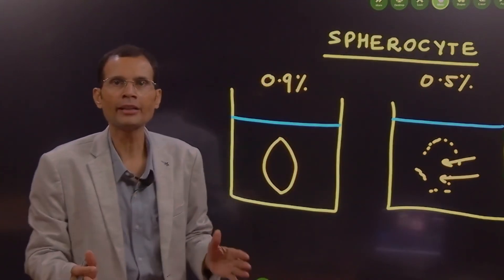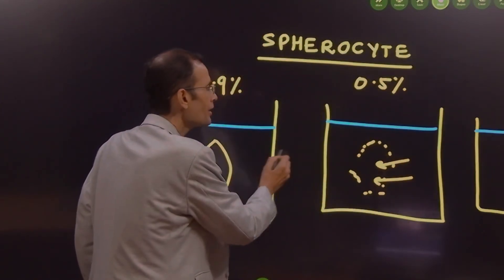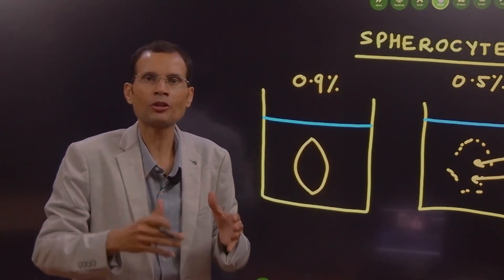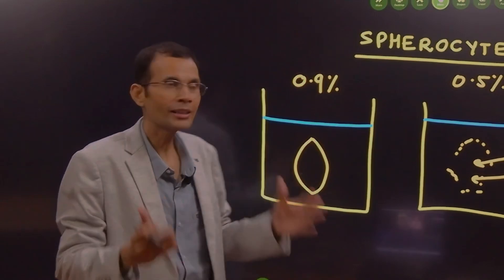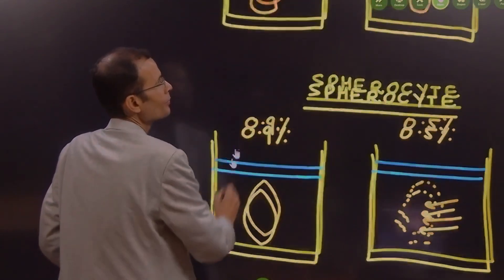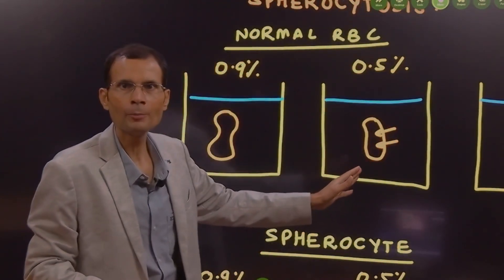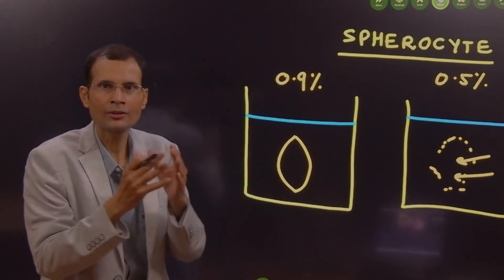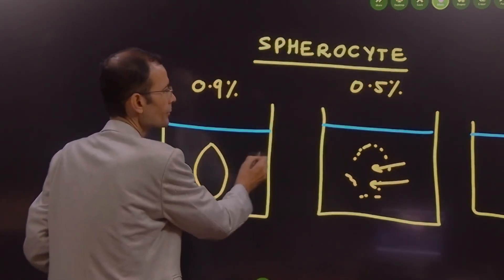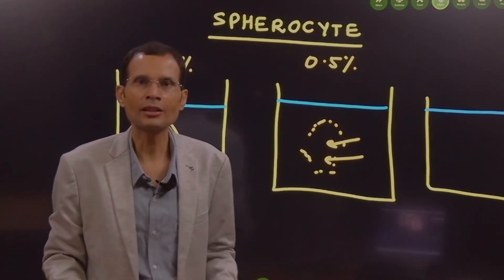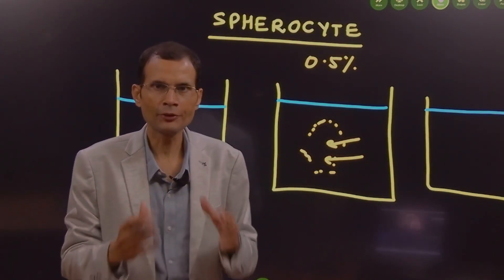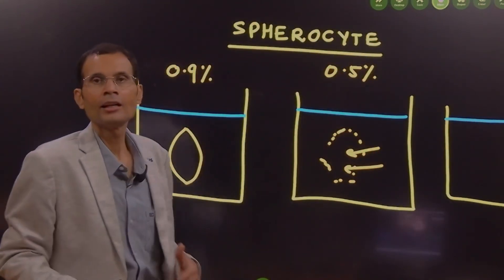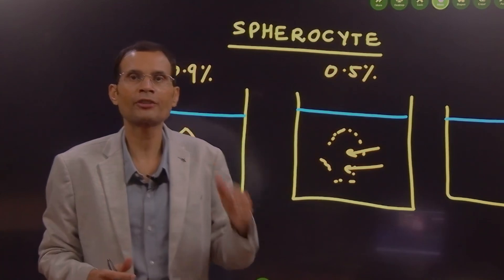But if it is already a spherocyte, it has less surface area, and as water starts entering the RBC it has less scope to accommodate that water — meaning it will break down earlier than the normal RBC. In 0.5% sodium chloride, a normal RBC swells but doesn't break down easily, whereas in spherocytosis, since it has less capacity to accommodate the entering water, the RBC breaks down early. So the reasoning is: the sphere-shaped RBC has less chance of accommodating water, and therefore its osmotic fragility increases.